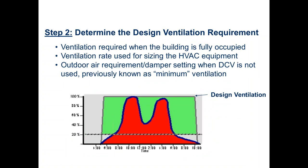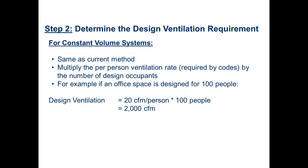We need to establish a new base ventilation rate. The 100% line is the code-required design ventilation rate. The code changes in 2004 and 2006 made this crystal clear by separating into per-person and per-square-foot components. The per-square-foot portion becomes our new baseline minimum, taking care of building pressurization needs. The per-person plus per-square-foot total is our regular code minimum. Now we know exactly how far we can modulate back and still be within code.